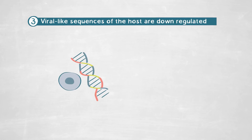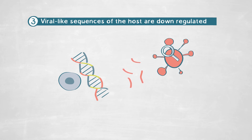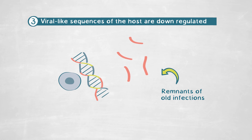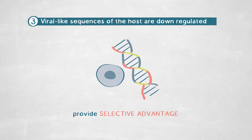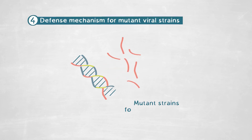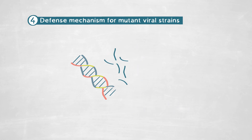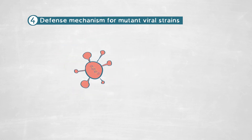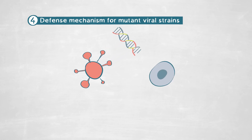But this is not a random process. We discovered that specifically, viral-like sequences already present in the genome of the host are being targeted by the down-regulation driven by the virus. These viral-like sequences are thought to be remnants of old infections that the host has been able to overcome, and they have integrated these genes into their own genome in order to provide some unknown selective advantage. We generated mutant strains for these viral-like regions in the host chromosome, and when infected with our virus, we observed much more acute symptoms of viral infection, translating into very strong growth retardation. Altogether, this means that this viral-like region encodes for a new and unknown defense mechanism that not only provides defense for the host, but also allows the development of coexistence between the virus and the host.